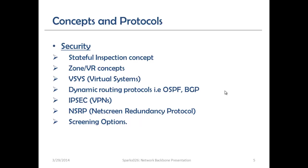In security, we have several concepts: stateful inspection, and the zoning concept, where you differentiate traffic according to zones — trusted zone, DMZ zone, untrusted zone, and so on. We also have the virtual routing concept, virtual systems, and dynamic routing protocols such as OSPF and BGP applied to security. For tunneling, we have IPsec tunnels, NSRP — the Next Screen Redundancy Protocol — and screen options.